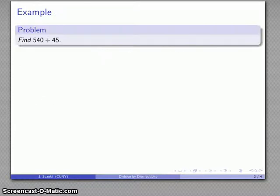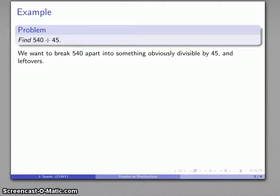So let's take a look at this in practice. Here's a problem: Find 540 divided by 45. The question to ask here is, I'd like to find something that I wouldn't mind dividing by 45. Maybe the way to start is to think about this 540, and I'm going to break it into something that is obviously divisible by 45, and then whatever we happen to have left over, we'll deal with later on.